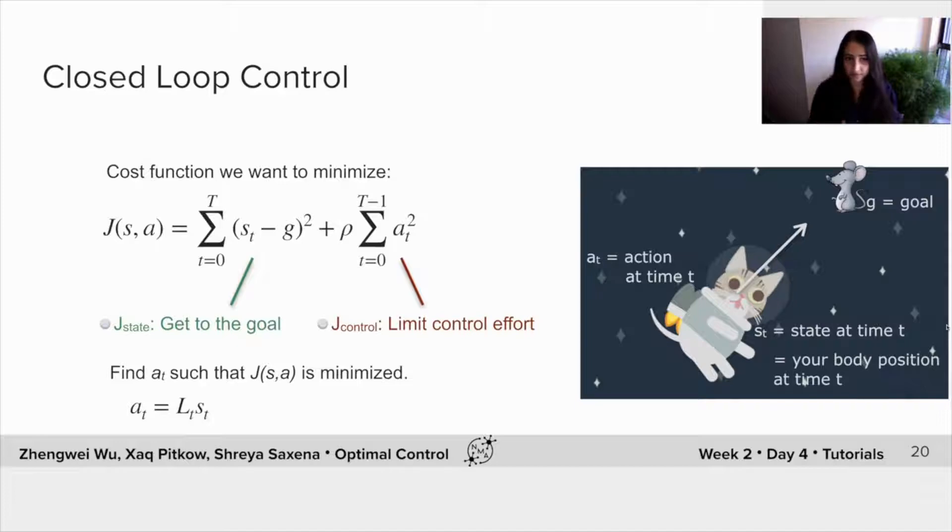So really, these are the two cost functions that we're going to put together. The first is J_state, that relates to getting to the goal. And the second is J_control. And in general, these two act against each other. So these are the two functions that we want to minimize.